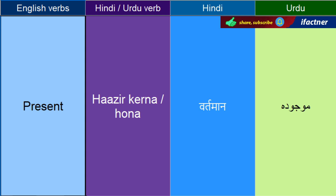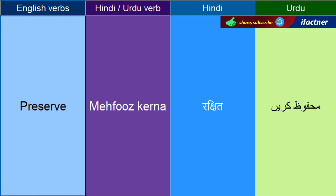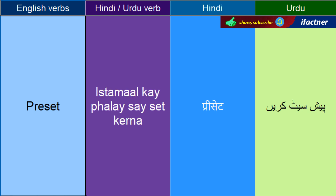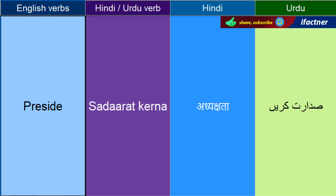Hazir kerna, hazir honay ko kehengay — Present. Mahfooz kerna — Preserve. We need to preserve this building — hameh is building ko mehfooz kerne ki zaroorat hai. Istamal ke pahle se set kerne ko kehthay hain — Preset. Sadaarat kerna — Preside. He is presiding over a meeting — woh aik meeting ki sadaarat ker raha hai.